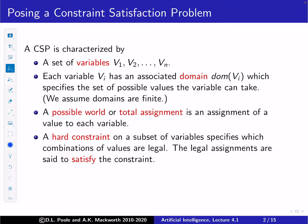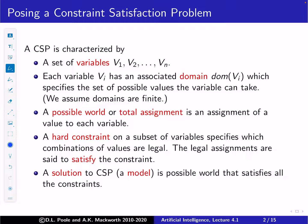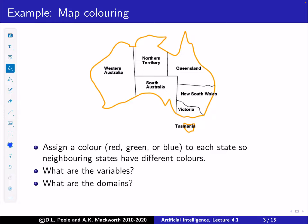What makes CSPs interesting is that they have hard constraints on a subset of the variables. A hard constraint specifies which combinations of values are legal. Legal assignments are said to satisfy the constraint. What we're looking for is a solution to the CSP, also called a model, which is a possible world that satisfies all of the constraints.